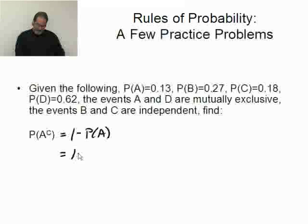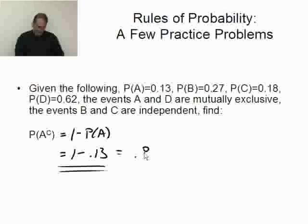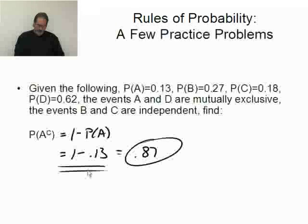Well, this is going to be 1 minus, what's A? 0.13. There you go. Which is what, 0.87? So there's the solution. Probability of A complement is 0.87.